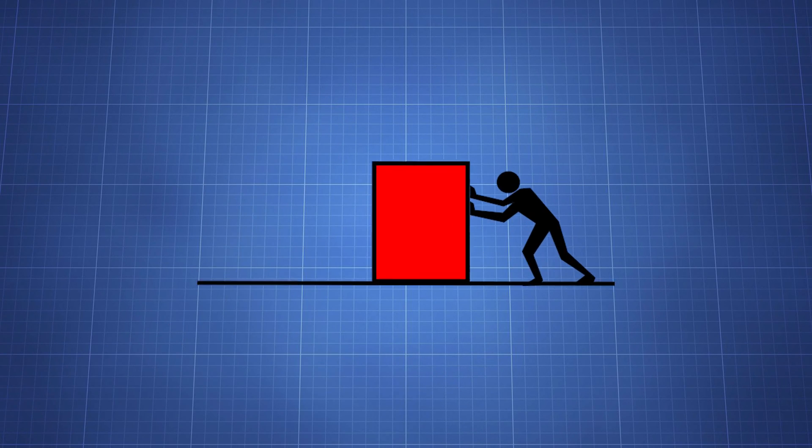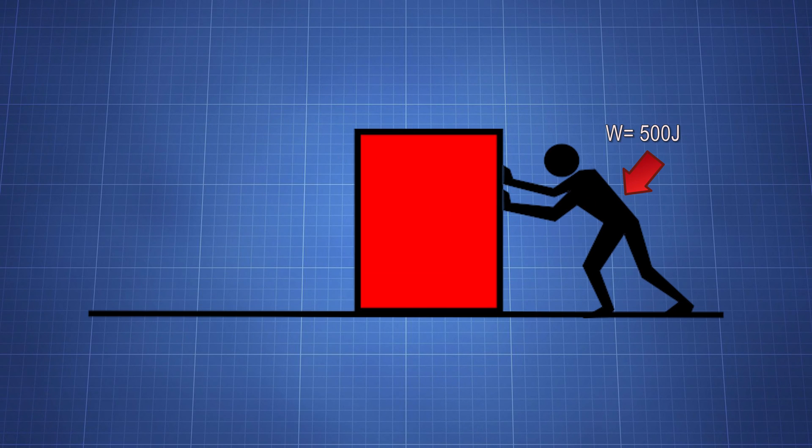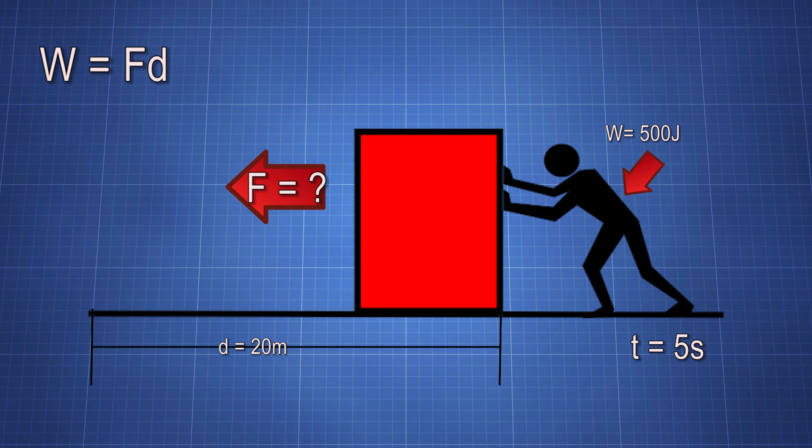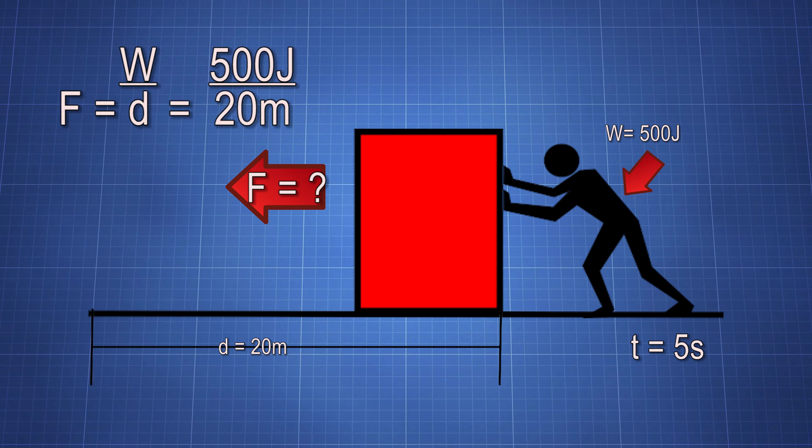Suppose we put 500 joules of work into moving a box 20 meters. How much force was applied? Well, work is equal to force times distance, so if we divide both sides by D, we get an equation F equals W over D. If we plug in our information, we would get that there was 25 newtons of force.